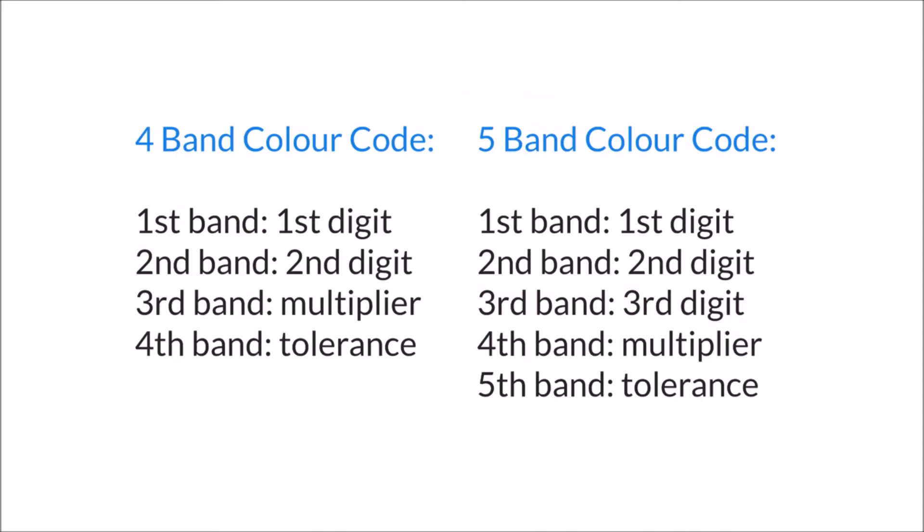What we can see here is for a four band resistor on the left, the first band gives us the first digit of the value of the resistance. The second band gives us the second digit. The third band gives us something called the multiplier, and the fourth band gives us something called the tolerance. We're going to have a look at an example of what these things mean in just a second. The only thing to bear in mind is for a five band resistor, the only difference is that the third band is for the third digit, the fourth band is for the multiplier, and the fifth band is for the tolerance. In our examples we're going to look at the four band color code.